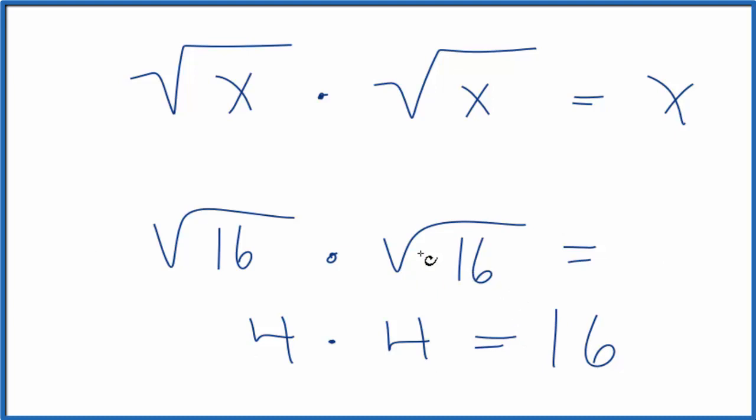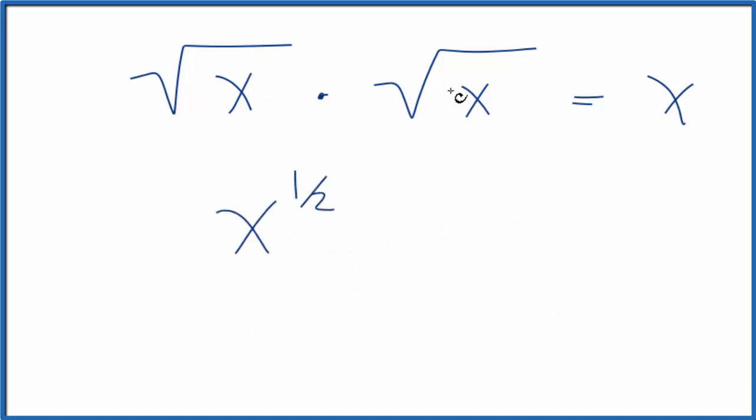Let's take a look at another way to do this. We can also think of the square root of x as x to the 1/2 power, and since we have two of them, we could just square that.